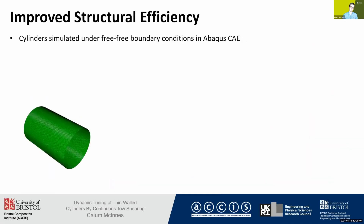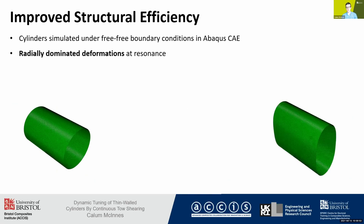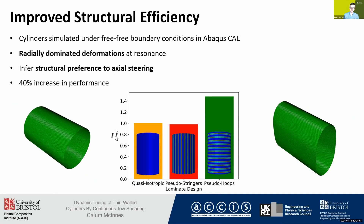To look at the potential performance benefits the CTS process can provide, a number of cylinders were simulated under free-free boundary conditions in Abaqus. The mode shape that arises when the structure is at resonance is dominated by radial deformations, from which we can infer a preferred steering direction. Because we're deforming in the radial direction, the structure prefers axial steering to embed those pseudo-hoops, which increase the circumferential stiffness components and resist radial deformation. This corresponds to an approximate 40% increase in performance, which is quite substantial.